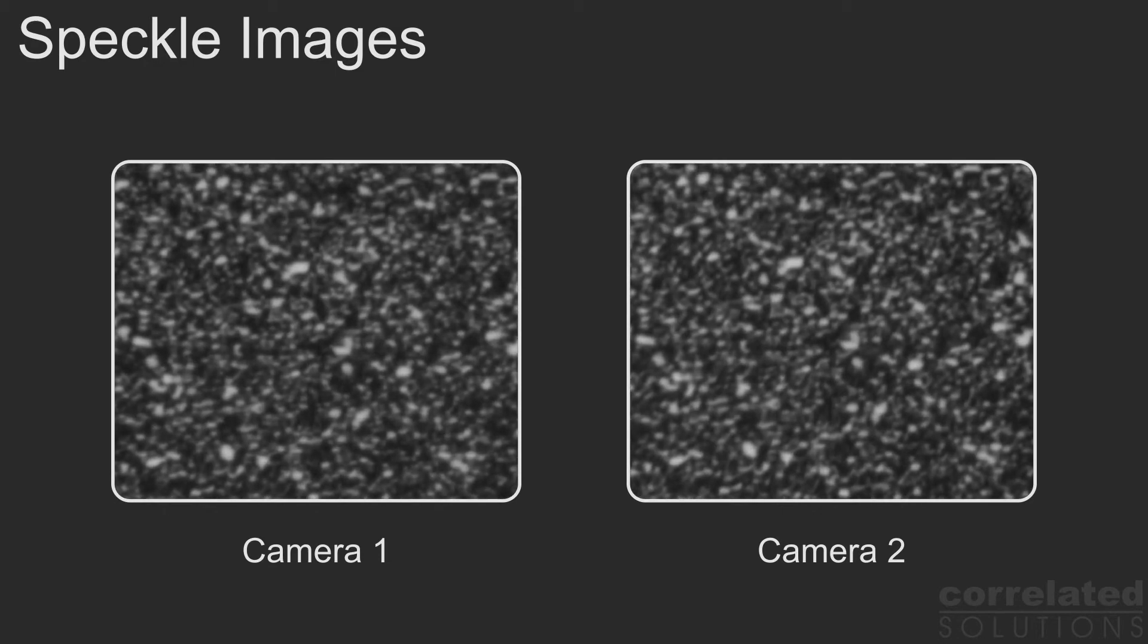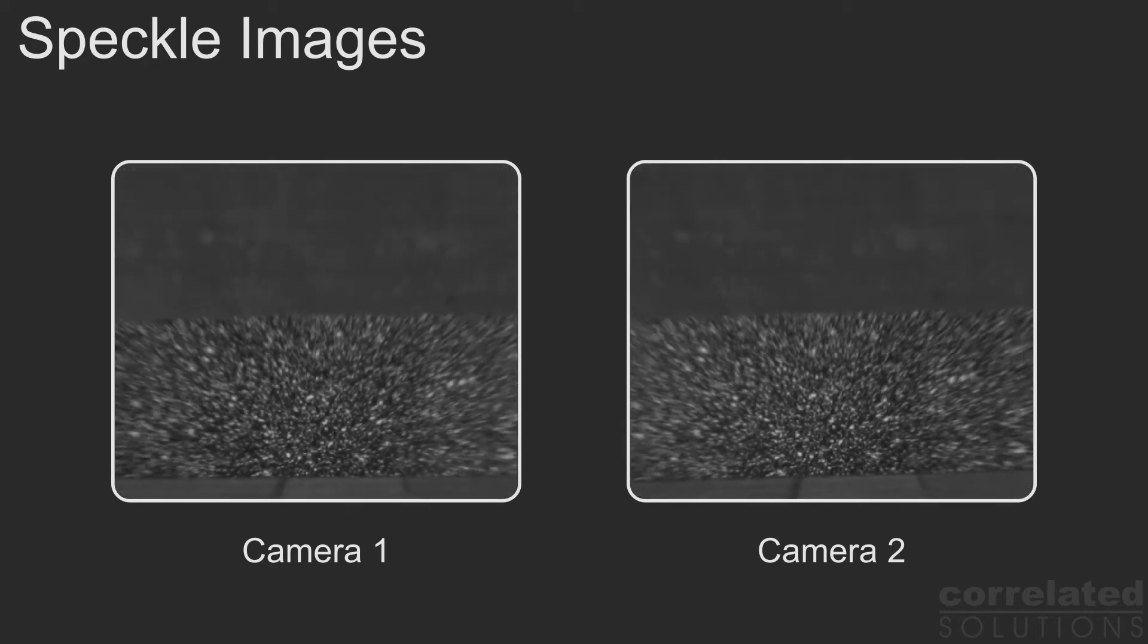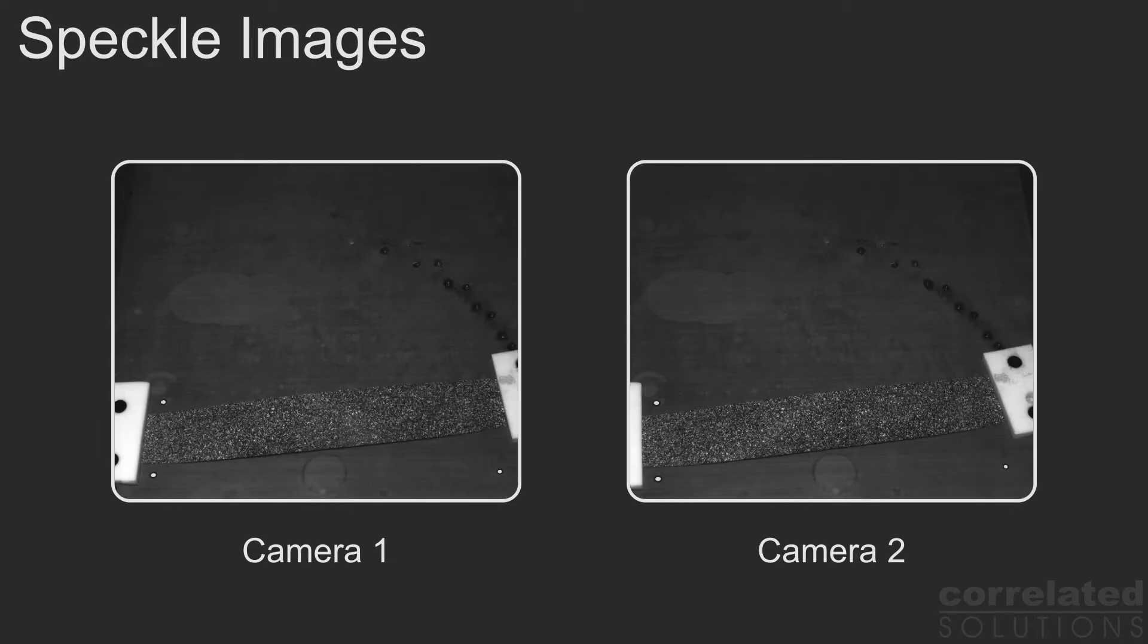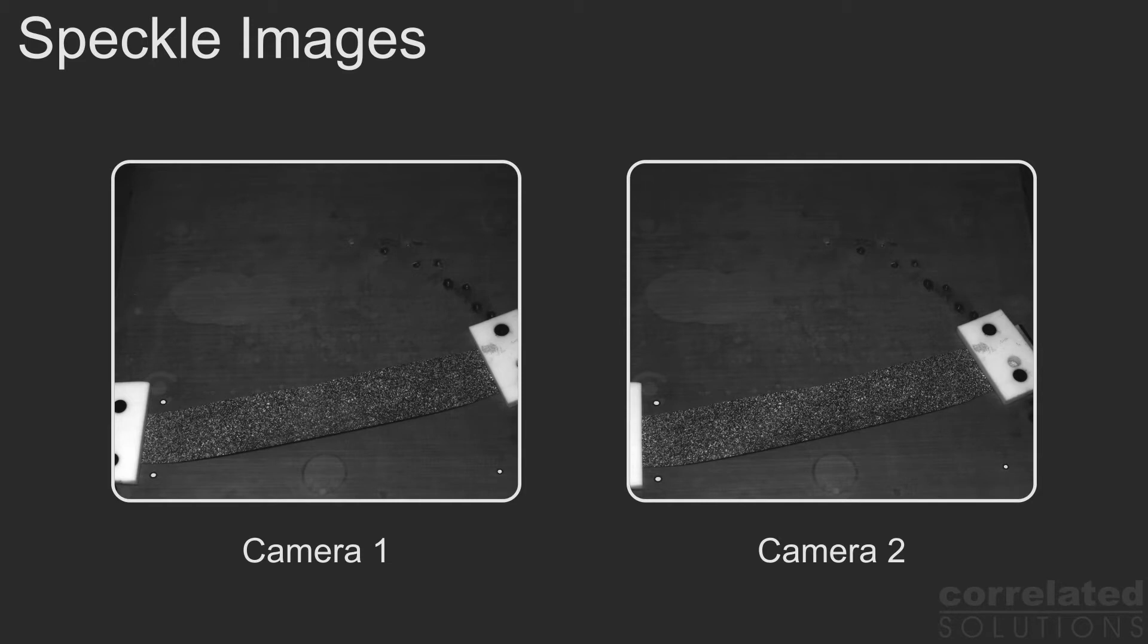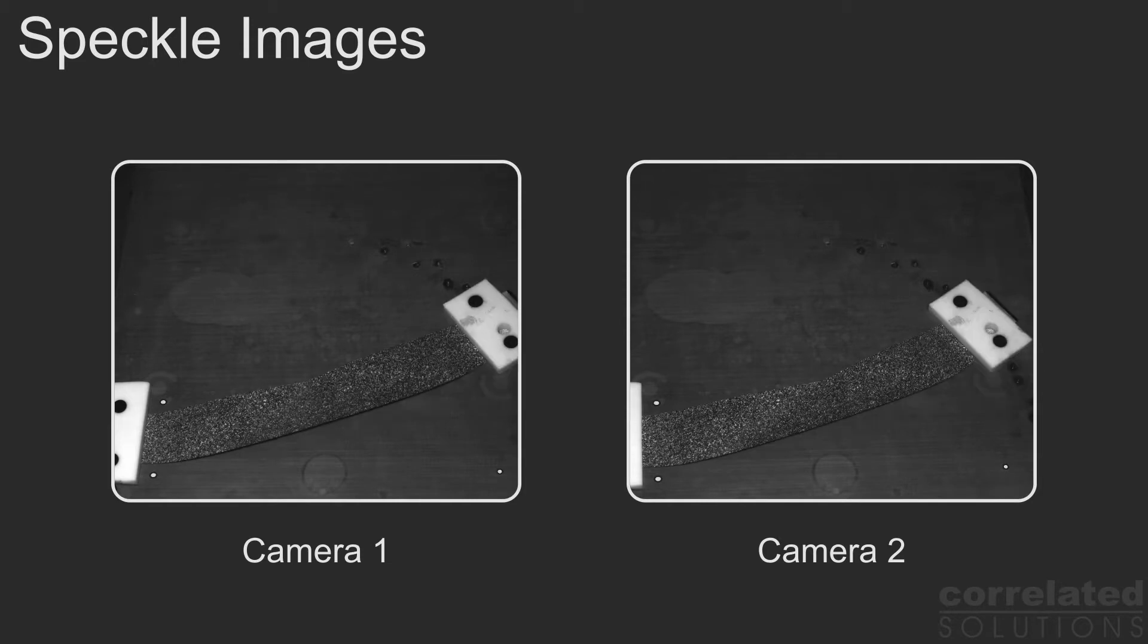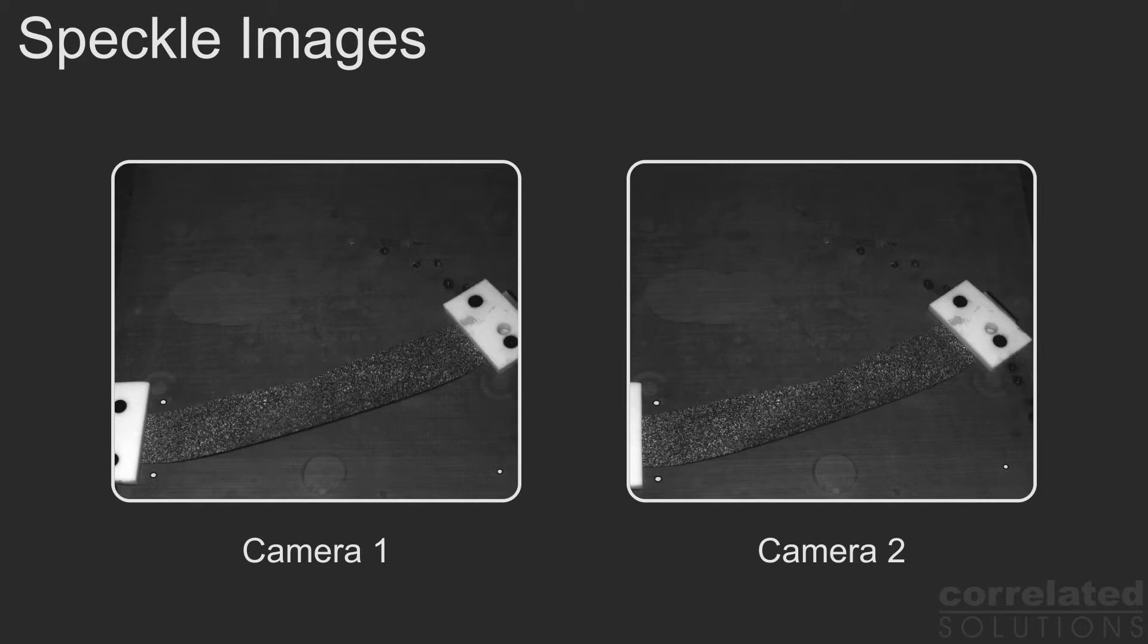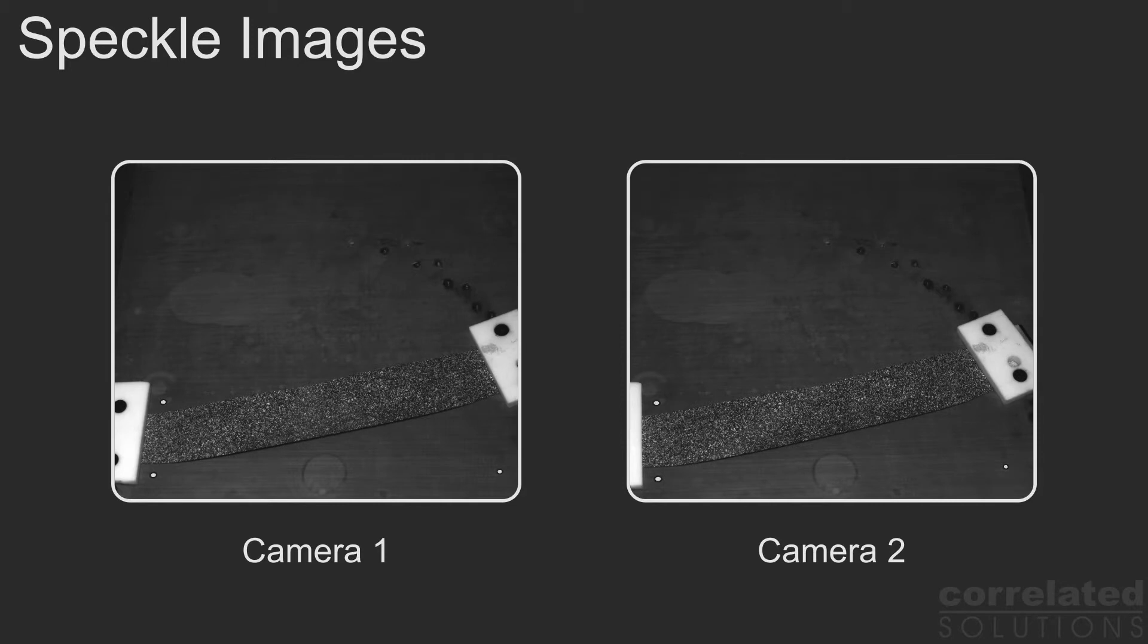The test fixture is a simple aluminum plate with a fixed grip on the left and a moving grip on the right. The specimen was attached to the moving grip using super glue. During the experiment, the right grip was moved to five positions along a circular arc. As you can see, the specimen buckles right away as curvature is applied.